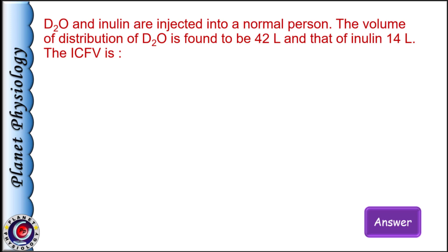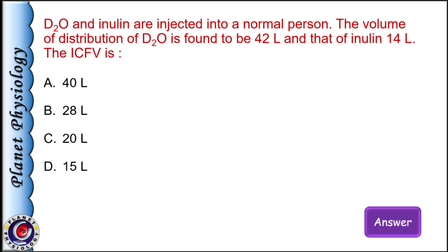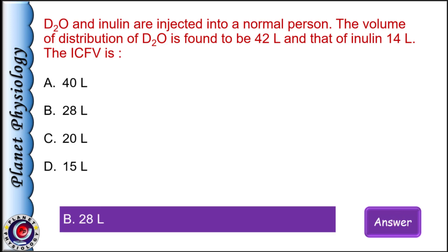D2O and inulin are injected in a normal person. Volume of distribution of D2O is found to be 42 liters and that of inulin 14 liters. The ICF volume is? D2O gives the value of total body water and inulin gives extracellular fluid volume. Subtracting these two gives intracellular fluid volume: 42 minus 14 equals 28 liters. So ICF volume is 28 liters.